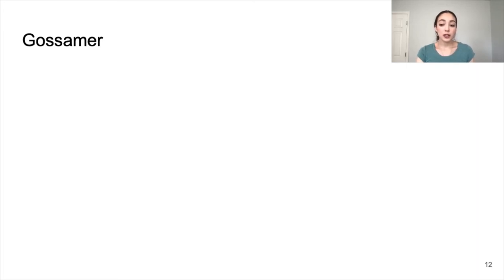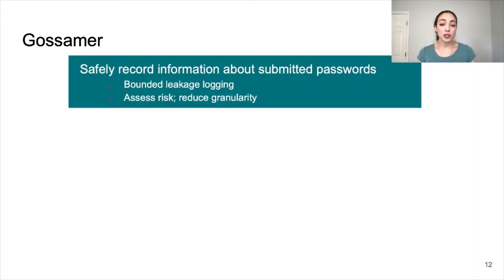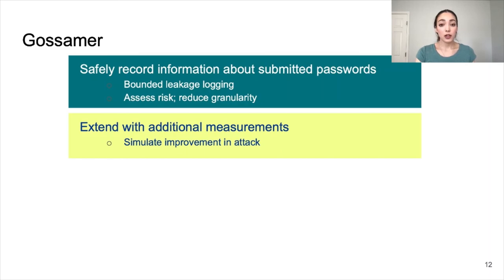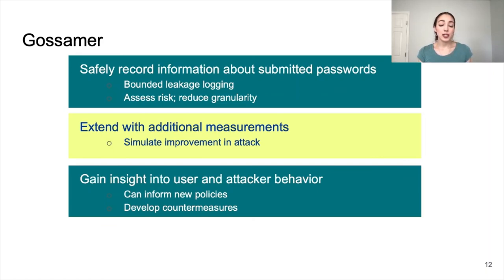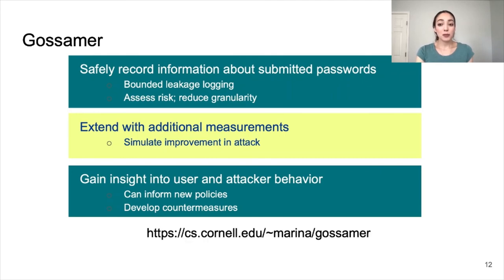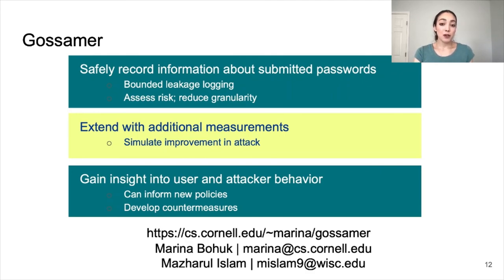In conclusion, Gossamer is a measurement framework for safely recording information about submitted passwords by conforming to design principles such as bounded leakage logging. Gossamer can be extended with additional password-derived measurements, and the potential risk of such measurements can be evaluated using our simulation of guessing attacks. We hope that the measurements enabled by Gossamer can be used to gain insight into user and attacker behavior, which can inform new login design policies and the development of attack countermeasures. We plan to make Gossamer open source so that it can be used and extended by other groups. Thank you for listening. We have a website with more details on Gossamer at the link on this slide, and my co-author Moser will be able to answer questions in person, or feel free to send me an email.